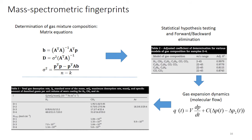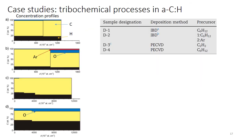Once the best model is selected, you can quantify and determine the emission rate using the time series of mass spectra channels and system parameters such as the volume and conductance of the diaphragm orifice. The final results are desorption rates expressed in SI units or in moles per second. Here you can see results for four carbon coatings from D1 to D4.